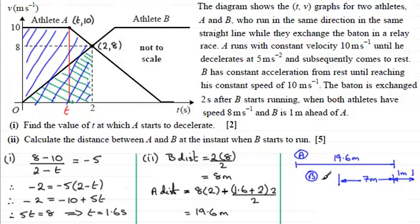So this was where B started here. So the distance that we're interested in, the distance between A and B at the start, must be 19.6 subtract 7. So I'll just put here that the distance, OK, between A and B would be equal to 19.6 minus 7. And that is 12.6. 12.6 meters.